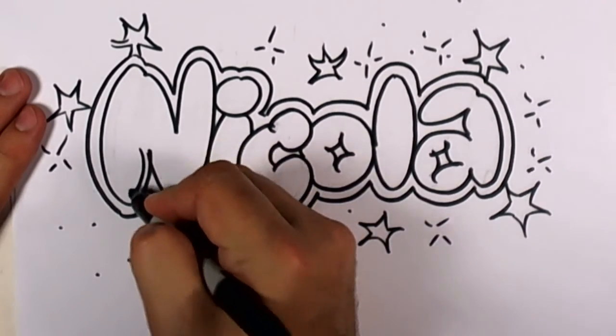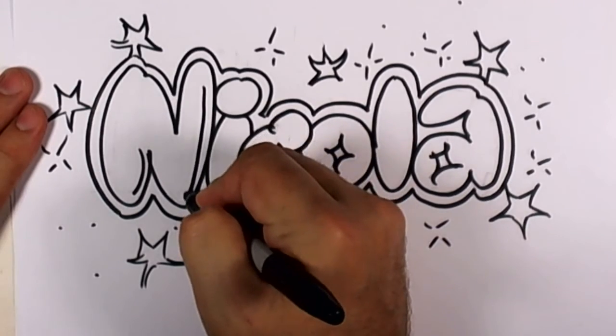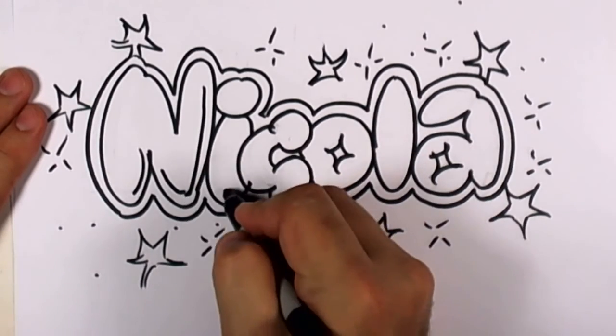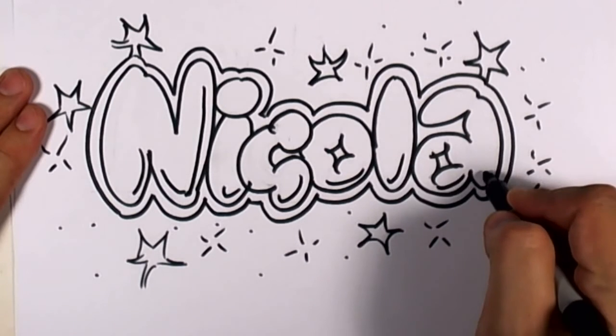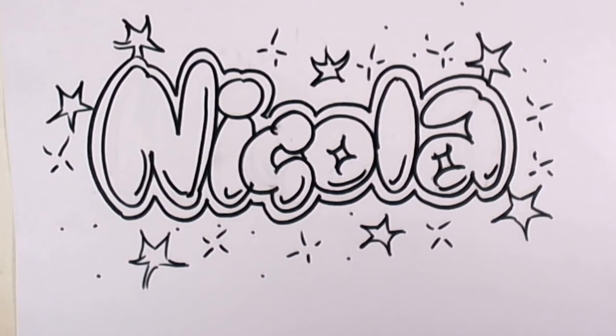And now, do a little reflection or shadow effect here. And we need that Nicola to pop out of there. So I think we need to do some shading in here. If I can find my pencil real quick.